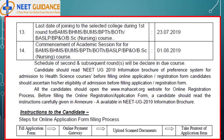Schedule of second and subsequent rounds will be declared in due course. Candidates should read the NEET UG 2019 information brochure or preference system for admission to health science courses before filling the online application registration form. Candidates should ascertain their eligibility before filling the admission registration form. All candidates should open www.mahacet.org for online registration. Before filling the form, candidates should read the instructions carefully given in Annexure A of the NEET UG 2019 information brochure.